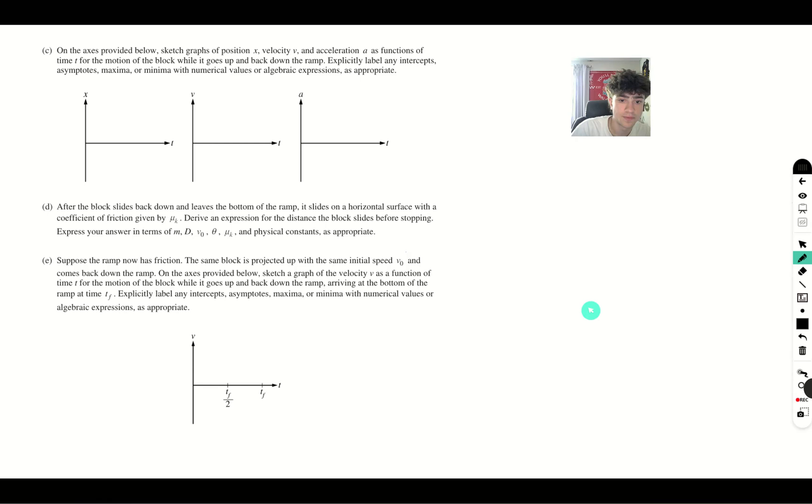Suppose the ramp now has friction. The same block is projected up and back down. On the axis below, sketch a graph of the velocity. So T final is where it has went up and came back down.